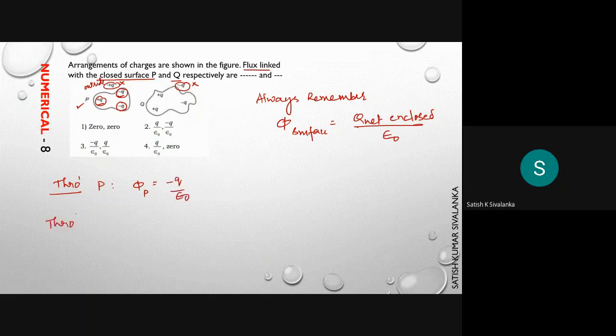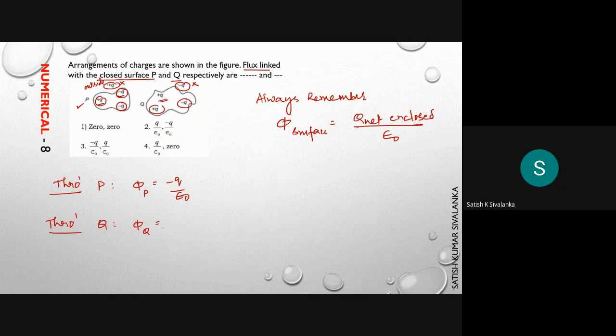Similarly, through Q, flux through Q, we have plus Q minus Q cancel. We are left with only plus Q. That is plus Q by epsilon 0.